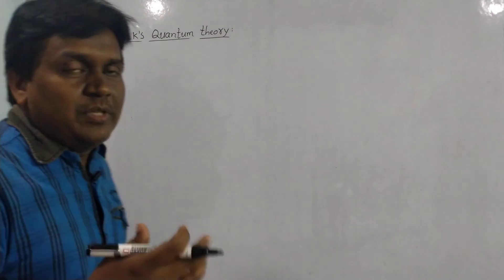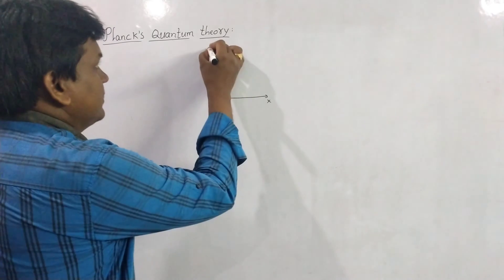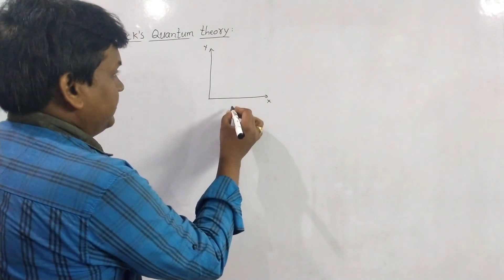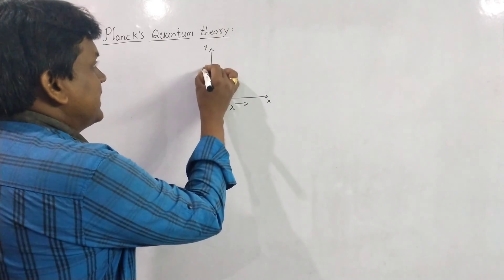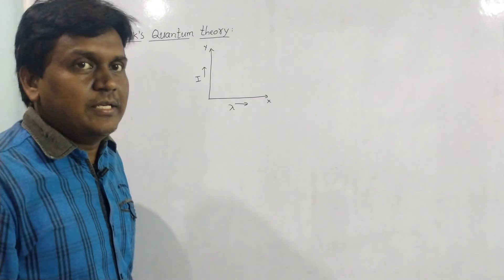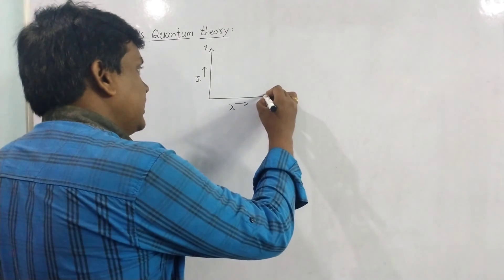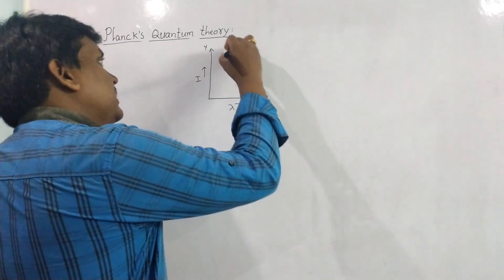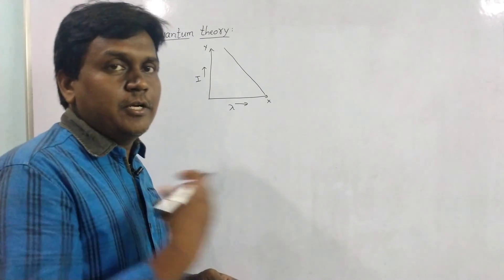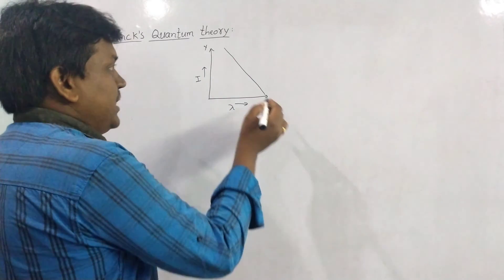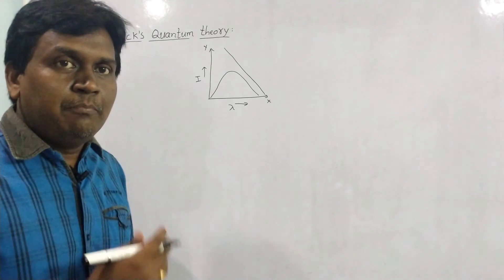Planck did an experiment with a black body and he assumed a graph. On the x-axis is the wavelength of radiation and on the y-axis is the intensity of radiation. He assumed that when a body is emitting radiation continuously, the graph should look like a smooth continuous curve.